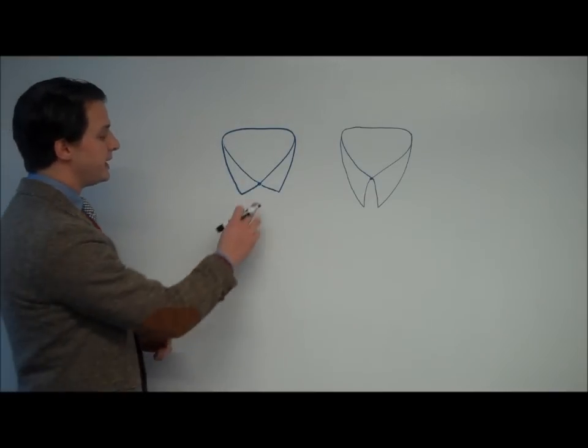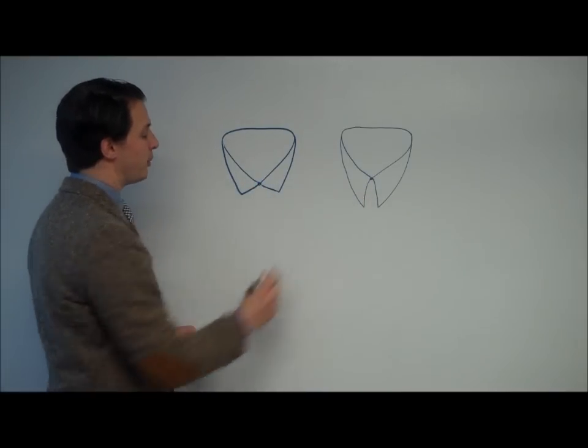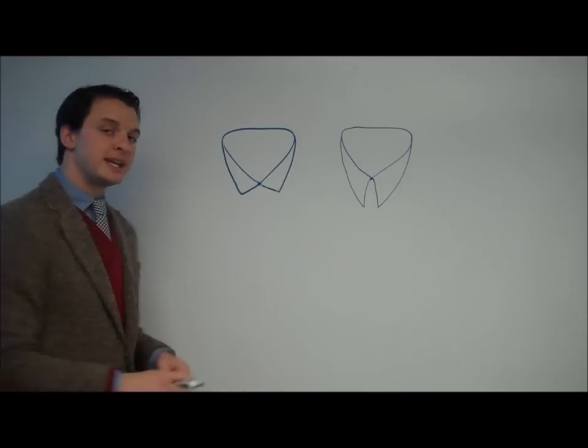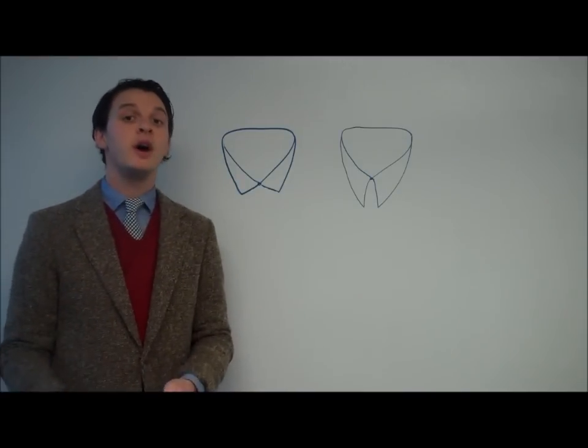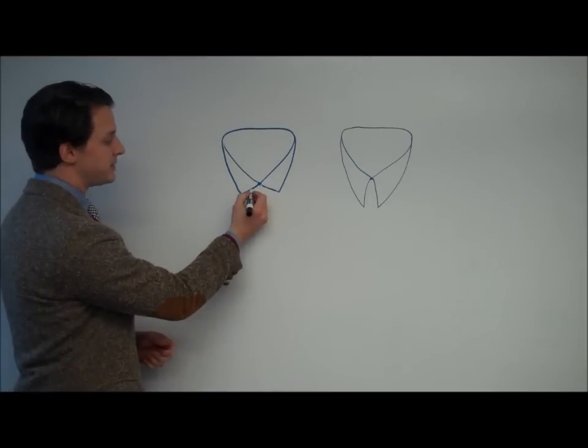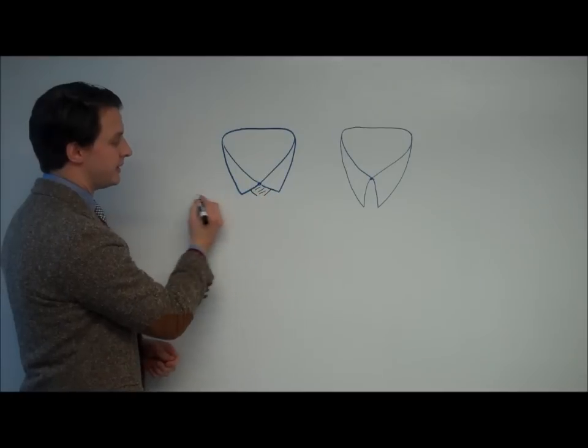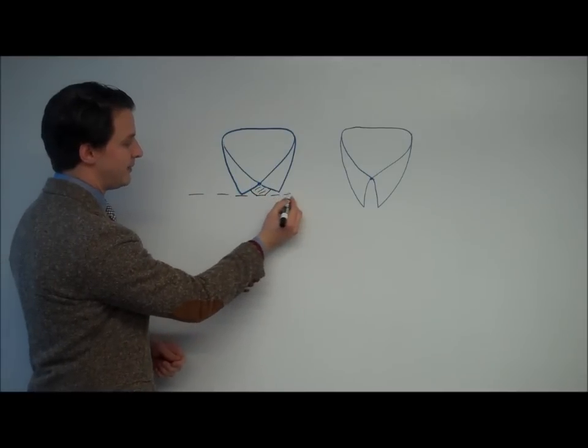Now to get more into detail, the spread collar, the points are a bit closer than the forward point. So I would pick either a four-in-hand or a half Windsor to have the knot come close to meeting, if not meet, the bottom points of the collar to create that nice, even flow.